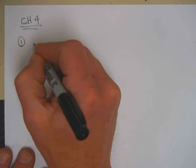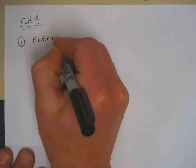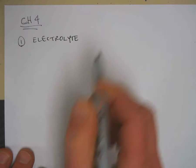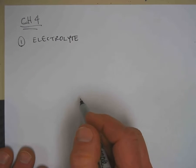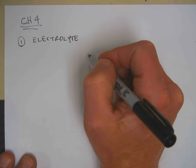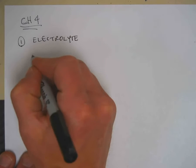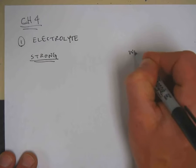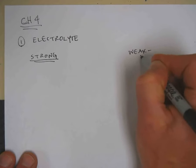Part 1, you need to know what an electrolyte is. An electrolyte is something that conducts electricity and there are two different types. There are strong electrolytes and you need to know which ones those are. And there are weak or non-electrolytes.